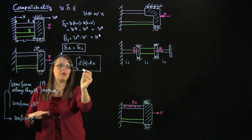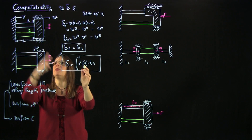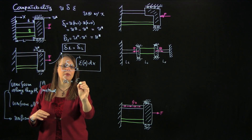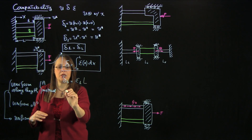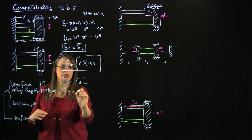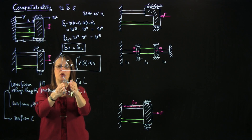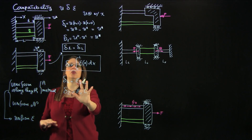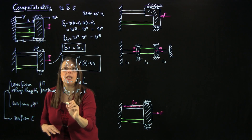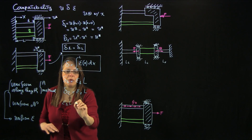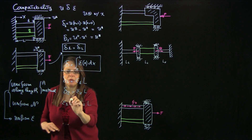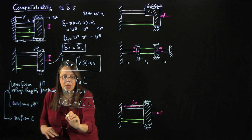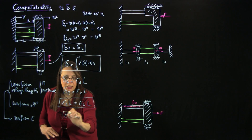If the strain is uniform and not a function of x, you can write delta 1 = epsilon_1 times L, and delta 2 = epsilon_2 times L_2. So elongation equals strain times length — but only under this very special condition. Then you can write epsilon_1 * L = epsilon_2 * L, which means epsilon_1 equals epsilon_2 in this special example.